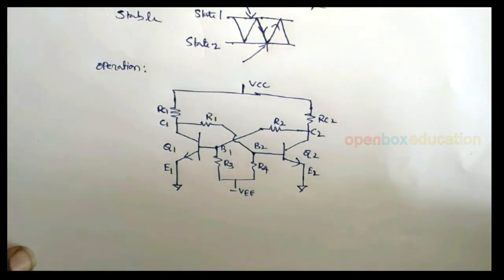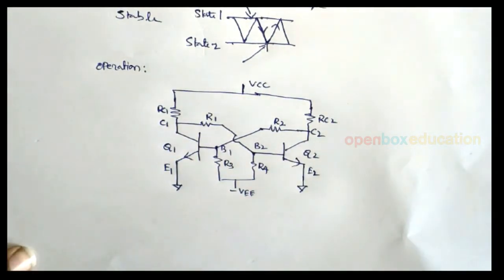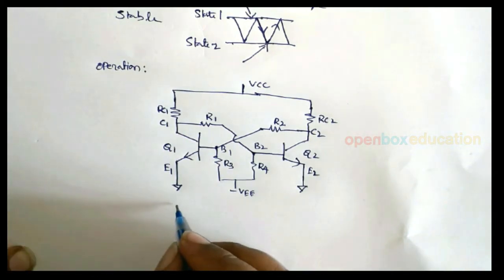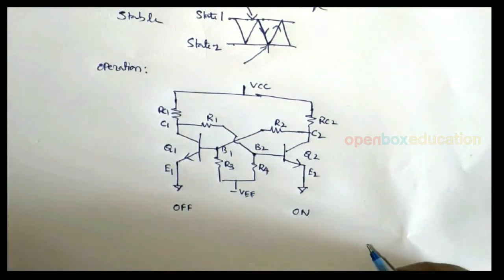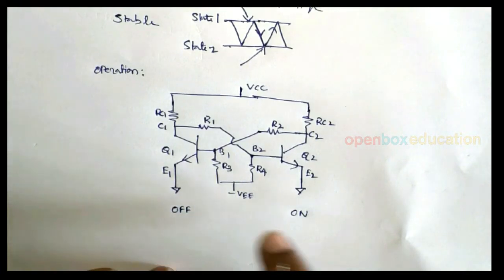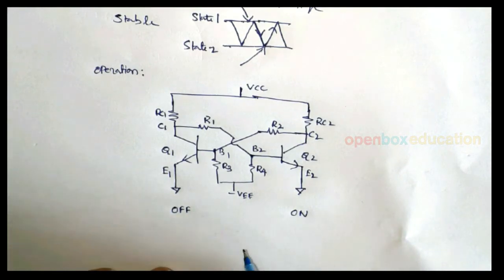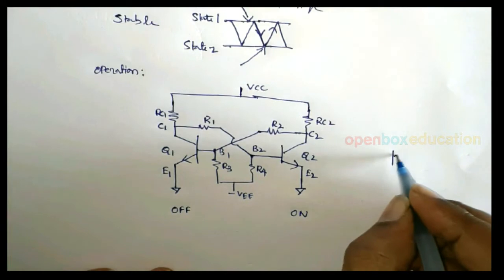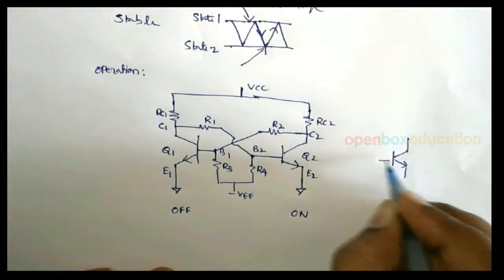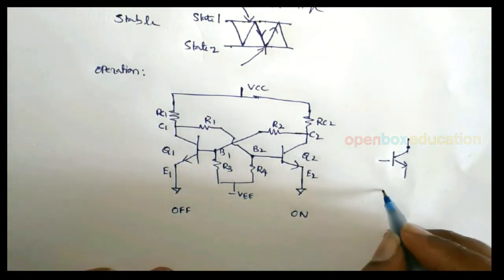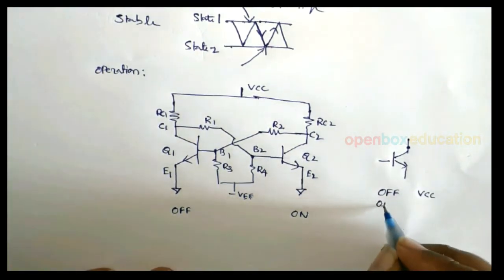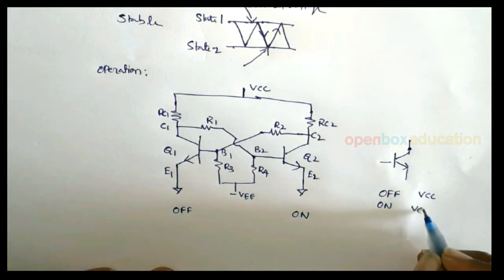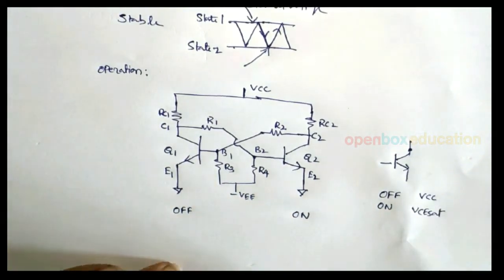Now I am going to explain about the operation of bistable multivibrator. Initially the circuit is in the state where Q1 is OFF and Q2 is ON. We can take any one state — Q1 OFF Q2 ON, or Q1 ON Q2 OFF. For a transistor when it is in OFF state, the voltage at the collector is VCC. When it is in ON state, the voltage at the collector is VCE(sat).